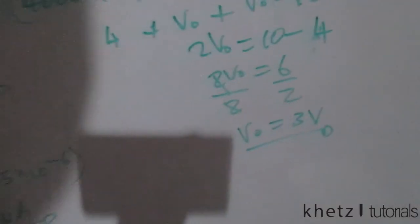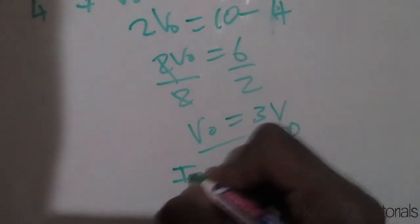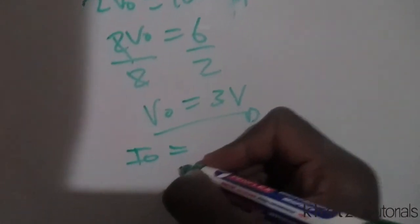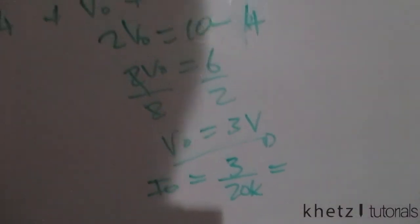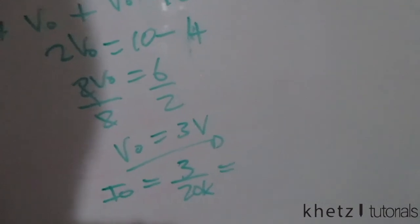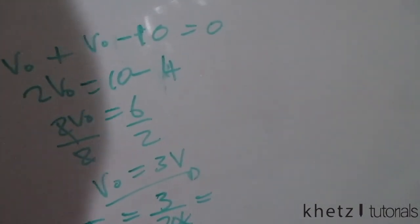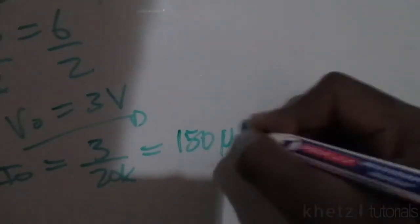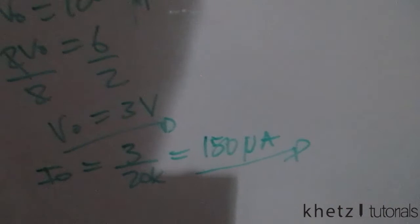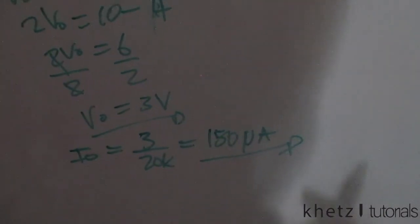Now using Vo = 3 volts in our earlier relationship: Io equals Vo divided by 20k equals 3 divided by 20k, which gives Io equals 150 microamperes. These are the two answers for this question: Vo = 3 V and Io = 150 µA.